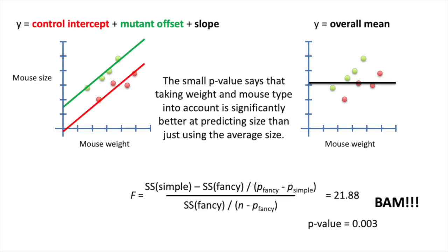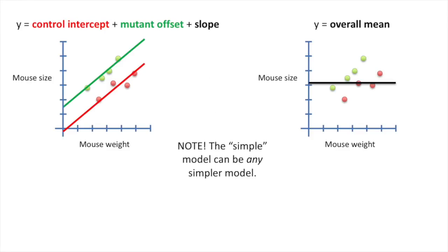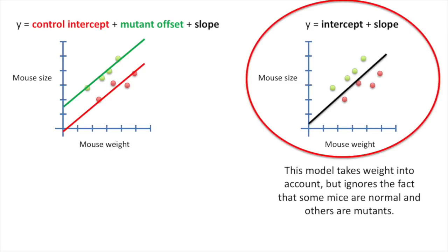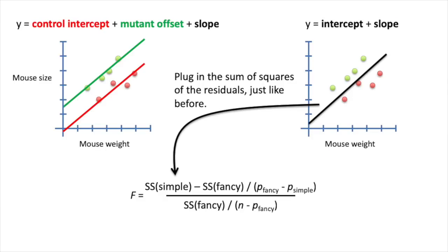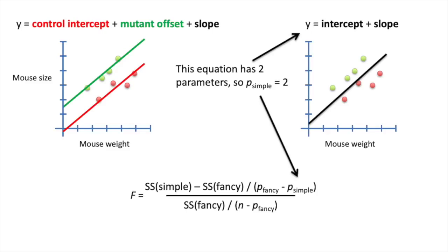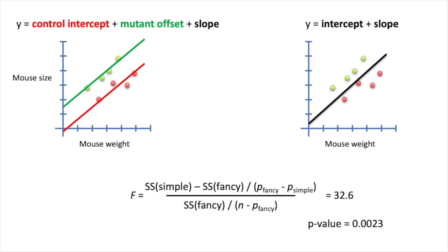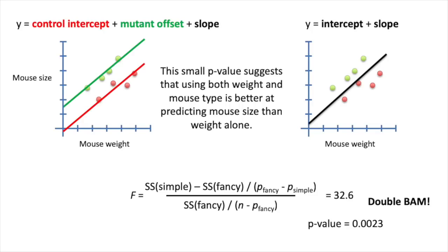BAM! The small p-value says that taking weight and mouse type into account is significantly better at predicting size than just using the average size. The simple model can be any simpler model. If we did a super simple linear regression — a model that takes weight into account but ignores the fact that some mice are normal and others are mutants — we plug in the sum of squares of the residuals. The simple regression equation has two parameters, so p-simple equals 2. We get a p-value equal to 0.0023. Double BAM! This small p-value suggests that using both weight and mouse type is better at predicting mouse size than weight alone.